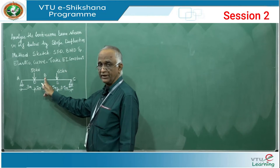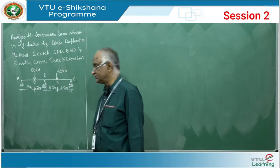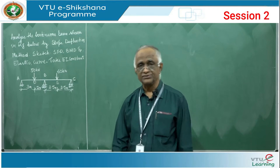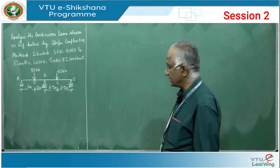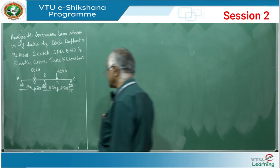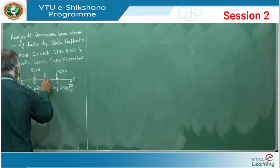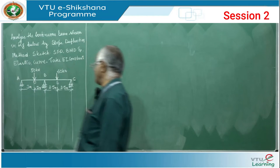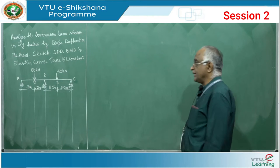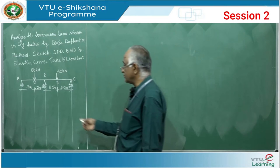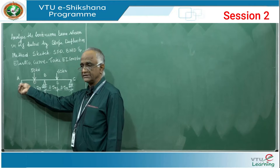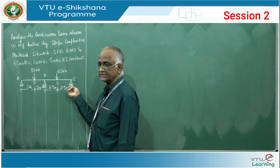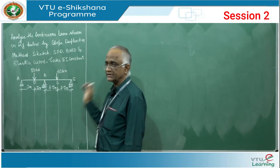Span BC has a 60 kN load exactly at mid-span, 2.5 m from B and 2.5 m from C, with total span 5 meters. There are three unknown rotations: θ_A at A, θ_B at B, and θ_C at C. Simple equilibrium conditions are insufficient; we need additional compatibility conditions.